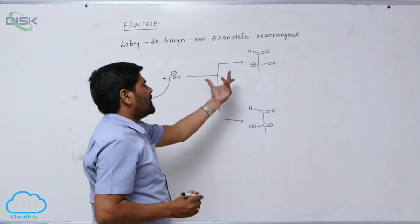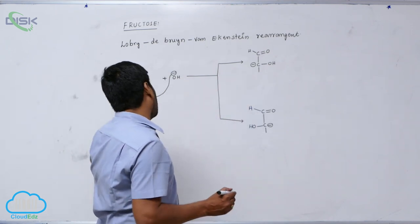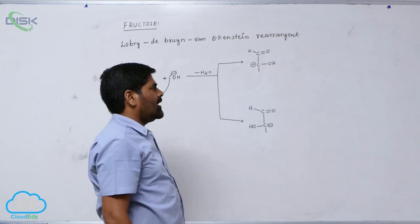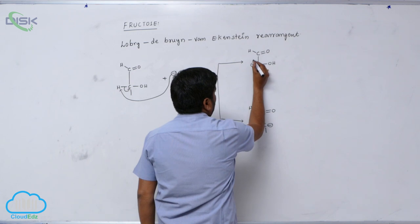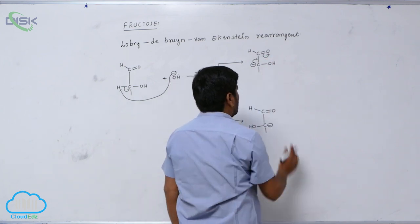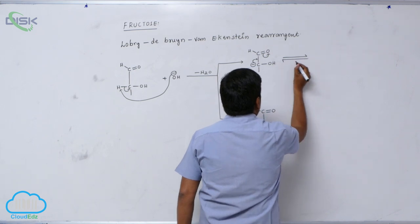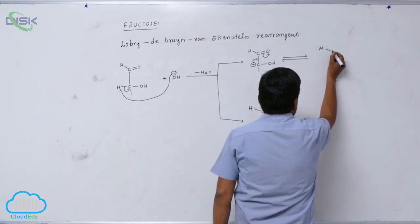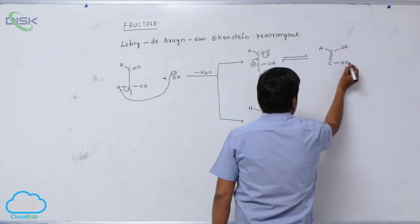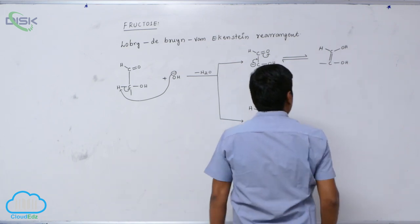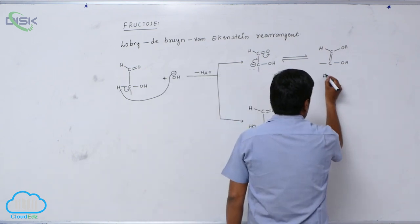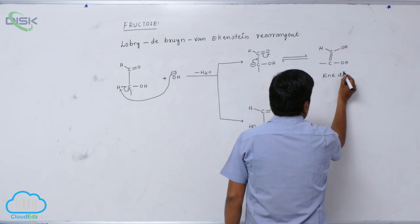Following proton removal, a loss of electrons and inversion of the carbon anion takes place. This converts the intermediate into a dienol, also known as an enediol — a structure with two OH groups and a C=C double bond between the first and second carbons.